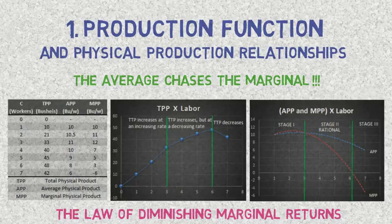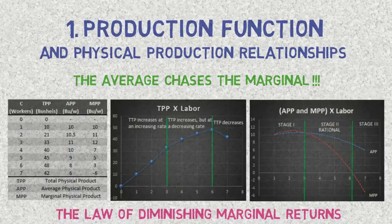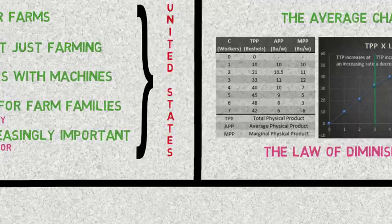Adding more of a single input to a fixed quantity of other inputs means there are not enough of the other inputs to make effective use of the addition. There are three stages of production. Stage one and stage three are considered irrational stages. Stage one can be considered irrational because a producer hiring one worker and another hiring four have the same average production, but the farmer with four workers produces 40 bushels while the one worker farmer only produces 10 bushels. Stage three is irrational because marginal production actually decreases with each additional unit of input. Thus, stage two is the only rational stage, since the producer is operating in the region of input use that is most productive.